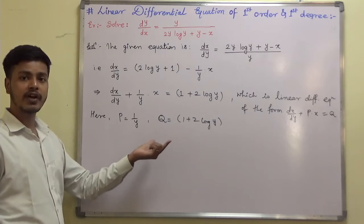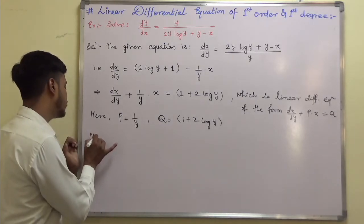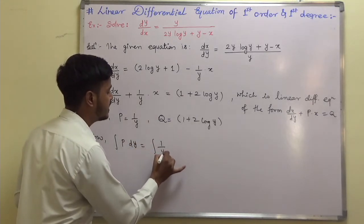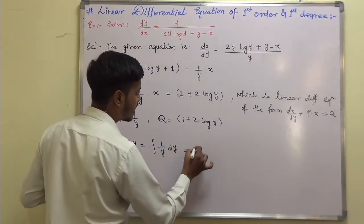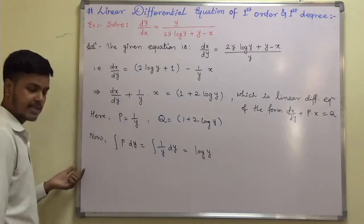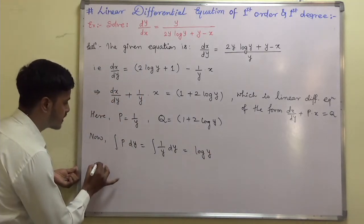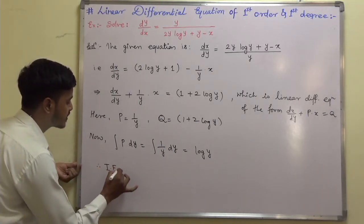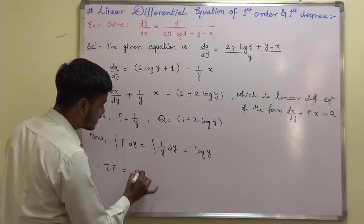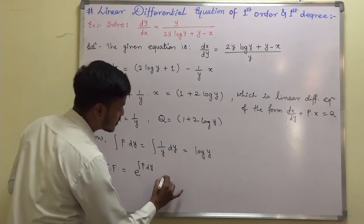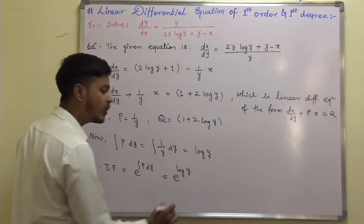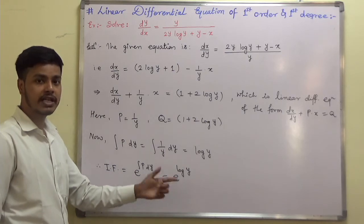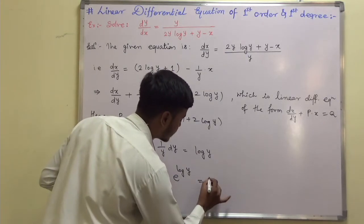Now, find the integrating factor. First, find the integration of p dy. This is integration of 1 by y dy, which equals log y. The integrating factor is e to the power of the integration of p dy. So this comes out to be e to the power log y. Since logarithm and exponentiation are inverses of each other, this simplifies to y.